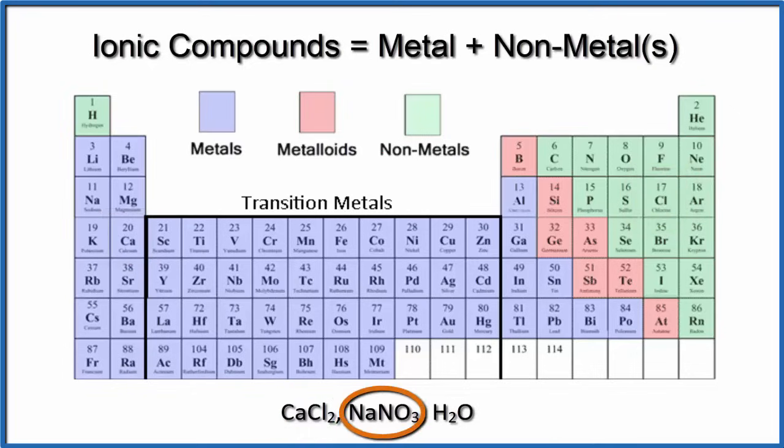For NaNO3, sodium is a metal, and then we have nitrogen and oxygen, which are both nonmetals. Metal and a group of nonmetals, that's ionic.